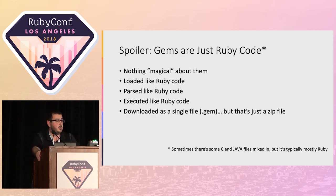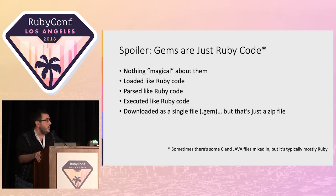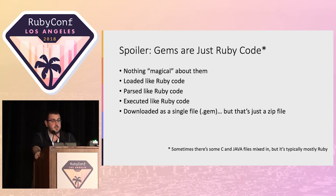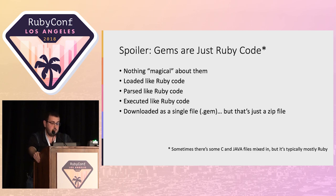Hate to spoil it for everyone, but there's not really much magic here. Gems are just plain old Ruby files — they look like Ruby files, they're read like Ruby files, they're executed like Ruby files. And they're downloaded in what's called a gem file, which is just a zip file renamed — specifically, it's a gzip file. So you're dealing with a zip file full of files, and that's the entirety of the gem pretty much.